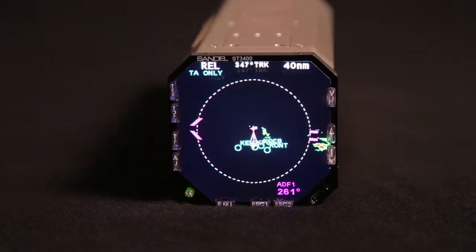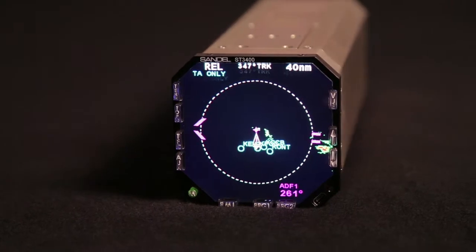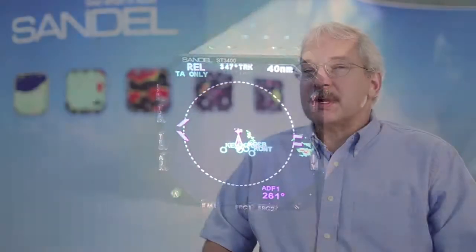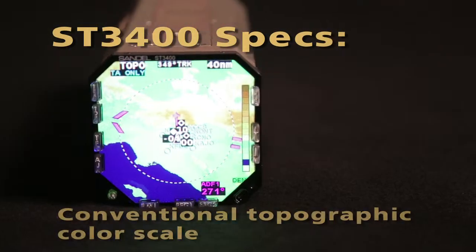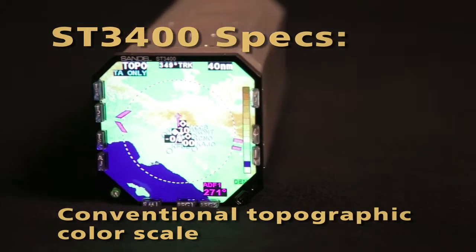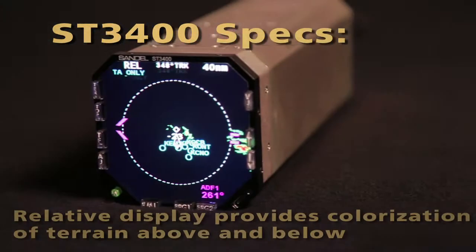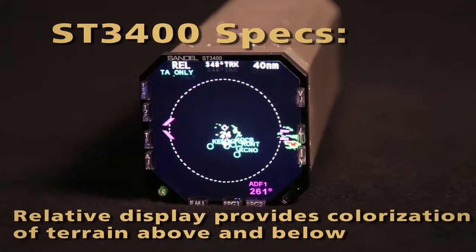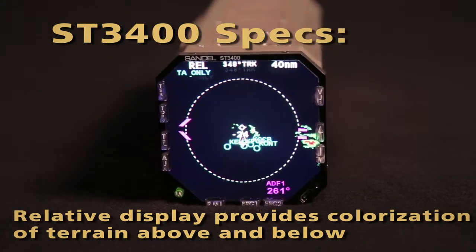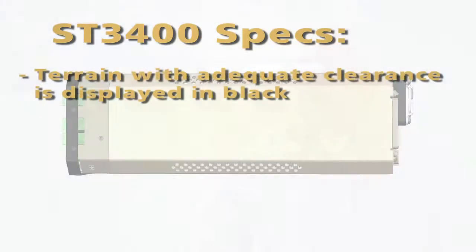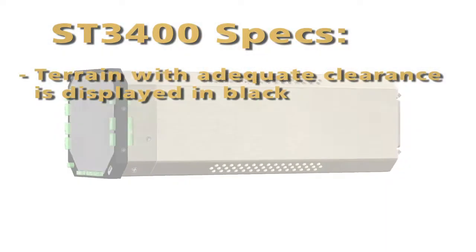The TOS display has three typical display modes. One of them is dedicated to the terrain displays, and the terrain displays are in either topo, which is a conventional topographic color scale like on a sectional chart. It has a rail display, which gives you colorization of terrain above and beneath you, or clear terrain, which is depicted in all black.